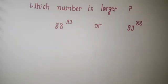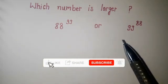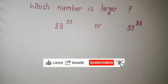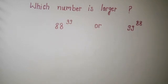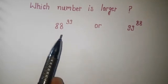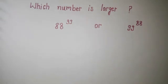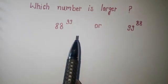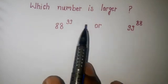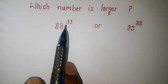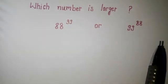Welcome back to Triple X Learning. Today we have this question: we have to decide which number is greater. To get this decision — which one is larger — we have to focus on the exponent of both numbers. We are seeing that the exponent of both numbers are multiples of 11: it is 9 times 11 and it is 8 times 11.